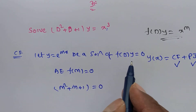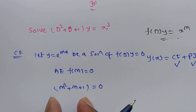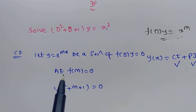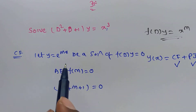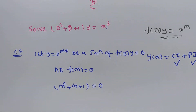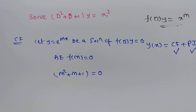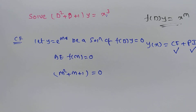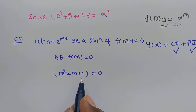Here y = eᵐˣ, so the bracket times eᵐˣ = 0. Since eᵐˣ is never 0, we get m² + m + 1 = 0. We have to find the roots. Since we cannot factor directly, we use the quadratic formula: m = (−b ± √(b²−4ac)) / 2a.